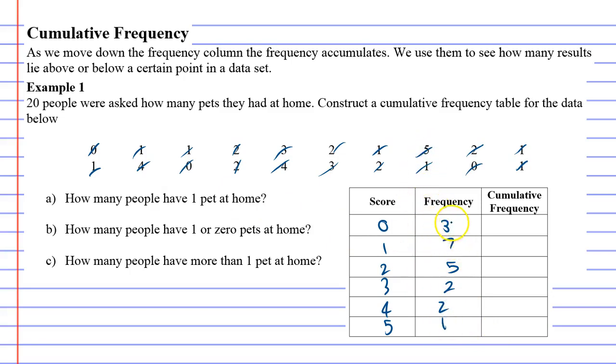Now we double check this. 3 plus 7 is 10, plus 5 is 15. So we're going to be 20. Good. We've got 20 altogether when we add the frequency.